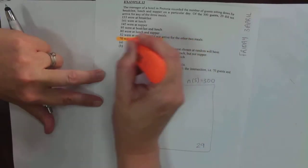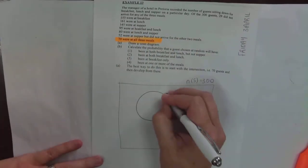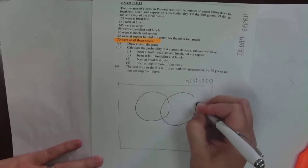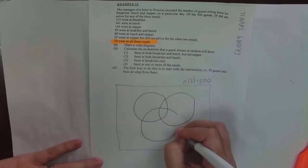So if we read through the information: 153 were at breakfast, 161 at lunch, 145 at supper, 95 were at breakfast and lunch, 80 were at lunch and supper, 52 were at supper but did not arrive for any of the two meals. And this is the info I'm looking for—I want to know what the intersection will be.